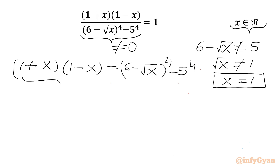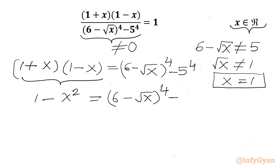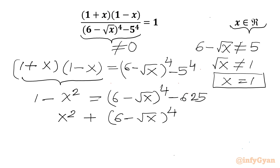Using the identity (a + b)(a - b) = a² - b², the left-hand side becomes 1 - x². The right-hand side is (6 - √x)⁴ - 625. After rearranging terms, we get x² + (6 - √x)⁴ = 626. This is our working equation.